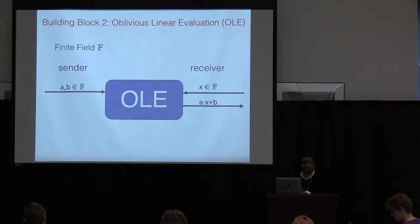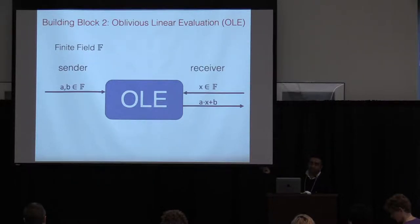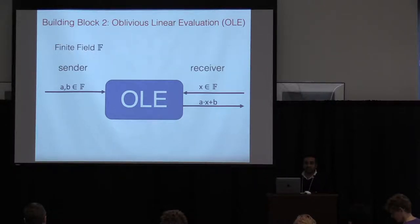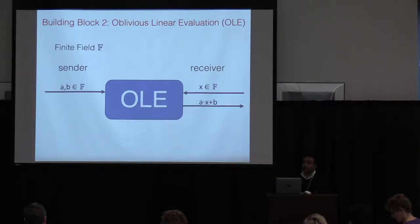A second primitive, more relevant to the arithmetic space, is the oblivious linear evaluation (OLE). This is a second building block focused on secure arithmetic computations.